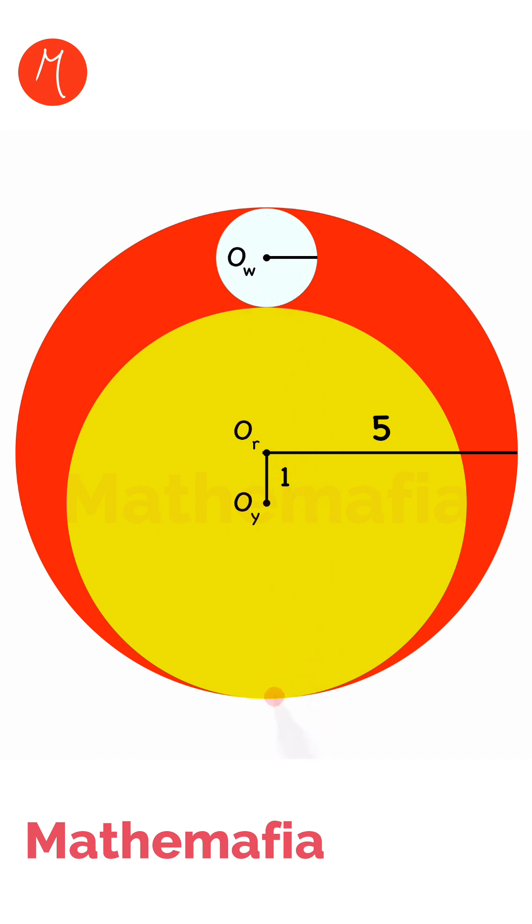The yellow circle touches the red circle. The radius of the red circle is 5, and the distance between Or and Oy is 1. We are supposed to find the radius of the white circle. The way these circles are aligned, if we draw a line starting from the common point of red and white so that it passes through Ow...